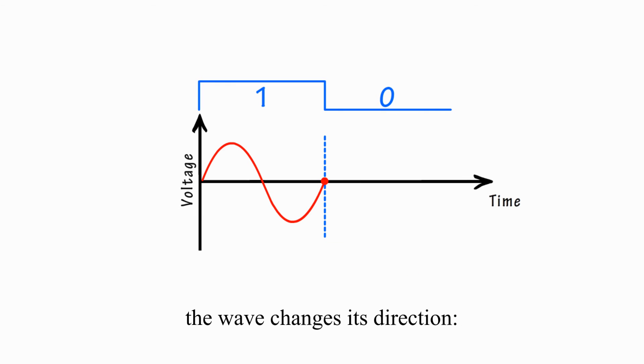But at the moment when the binary value changes to 0, the wave changes its direction. It stops going up and starts going down.